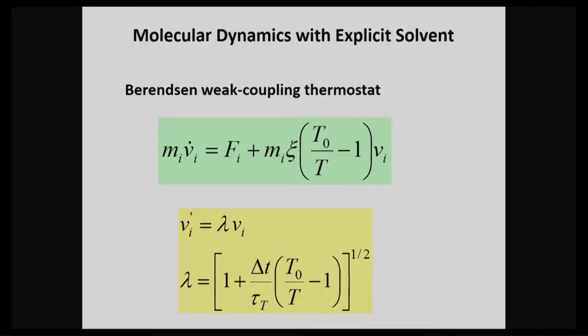People in this field, a lot of them use this kind of weak coupling thermostat to control the temperature of your system. It's a kind of extension of Newtonian dynamics. If you look at just these two, it's F equals ma. This is Newtonian equation of motion. But this part is a thermostat. By using this kind of scaling formula, then you control your system to your desired temperature.